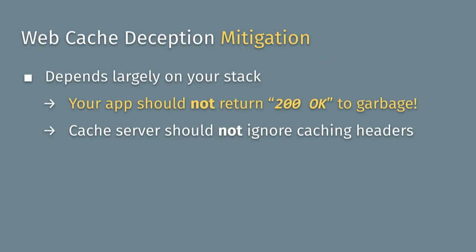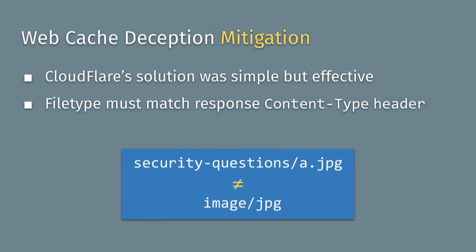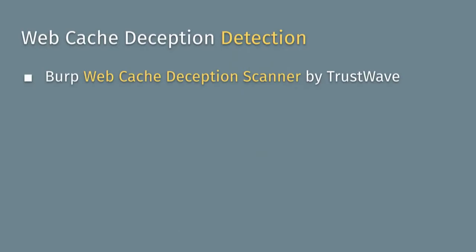Another fix is that your cache should not ignore cache headers like Cache-Control: no-store — but that's a hard problem since the cache just thinks it knows better. Cloudflare was vulnerable to this. Interestingly, Cloudflare's solution was not to respect HTTP headers but instead to require the response Content-Type to match the extension — so if you request /a.jpg but get text/html back, it just doesn't get cached. It's a weird hack but it works. To automate finding these bugs, you can use the web cache deception scanner by Trustwave.